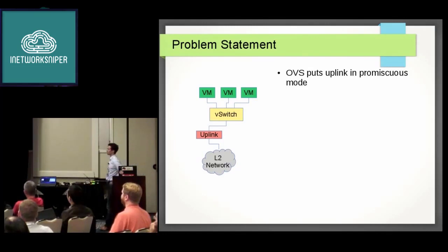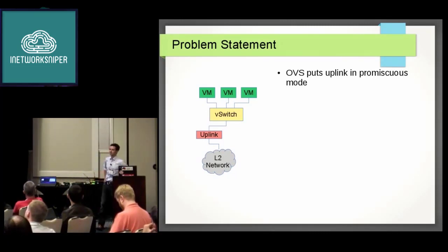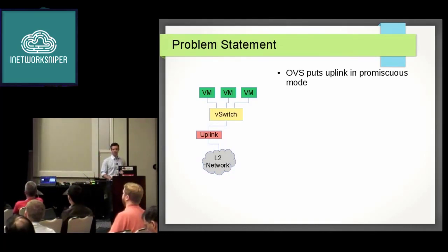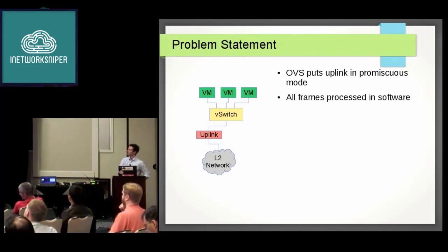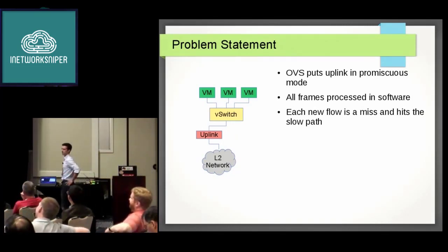First of all, I would like to define a problem statement. As you all know, OVS puts all the uplinks into promiscuous mode in order to receive all packets. That has the side effect that if the network is full of non-relevant traffic — not relevant to any VMs running on an OVS switch or behind any of the tunnels — the virtual switch has to process all of those packets in software. Each new flow, as we heard from Jerry before, is actually a miss and will hit the slow path.